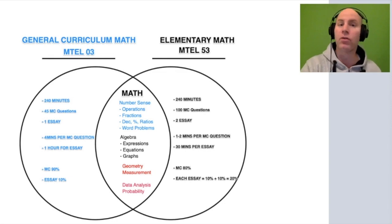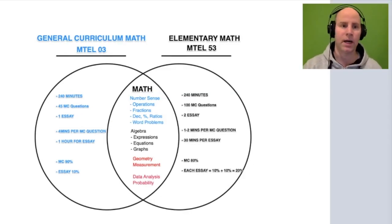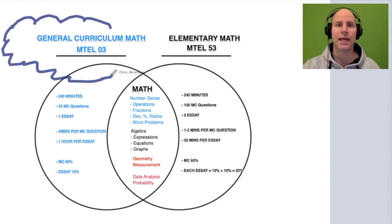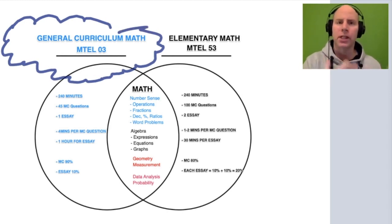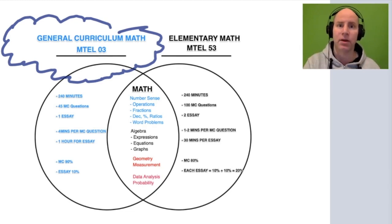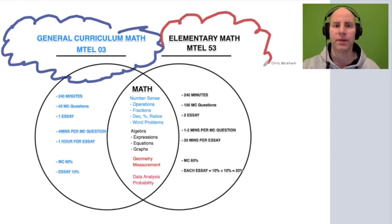Are you taking the 03 or the 53? There are some differences. Most teachers here are taking the general curriculum 03. If you're an elementary school teacher teaching grades 1 through 6, the general curriculum 03 is the one to take. If you're a special education teacher in grades 1 through 8, the general curriculum math 03 is also the one to take. If you wanted to be a math coach and coach other teachers in math at the upper elementary level, then you'd want to be taking the 53.